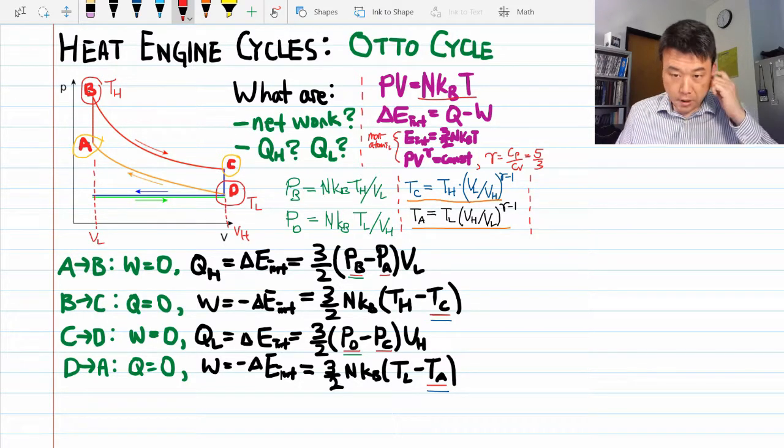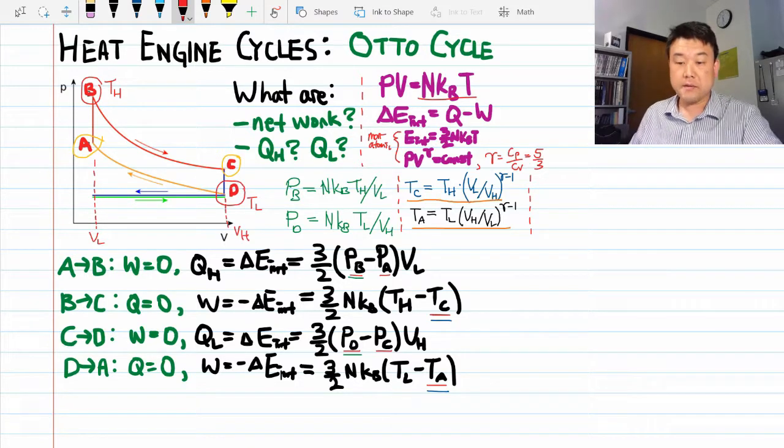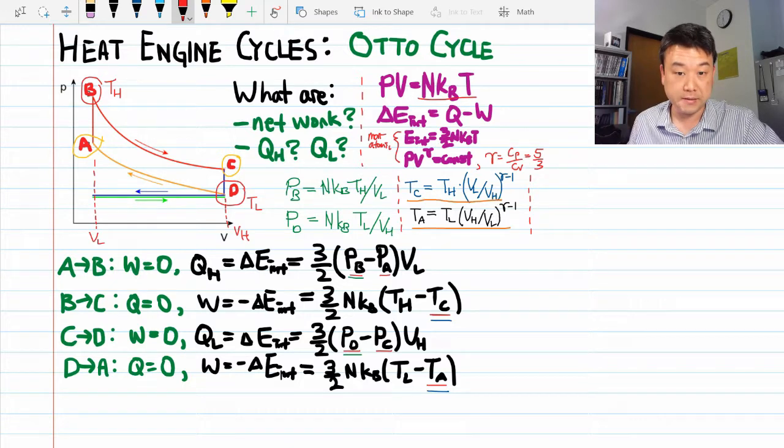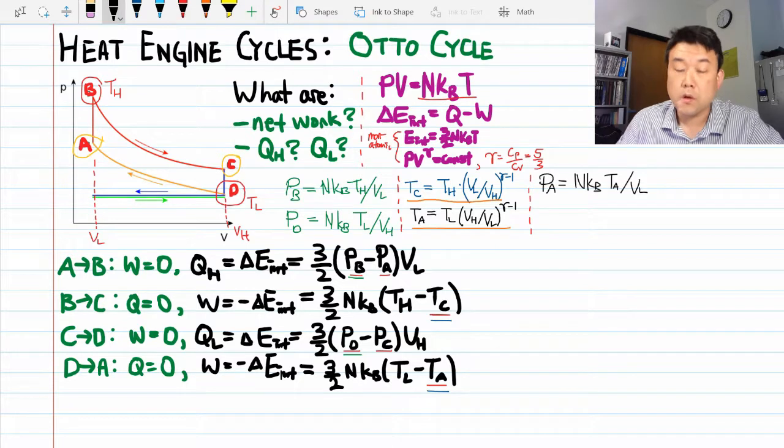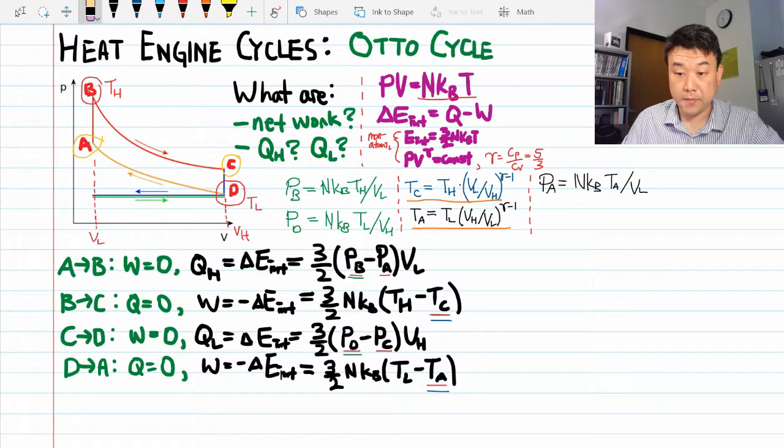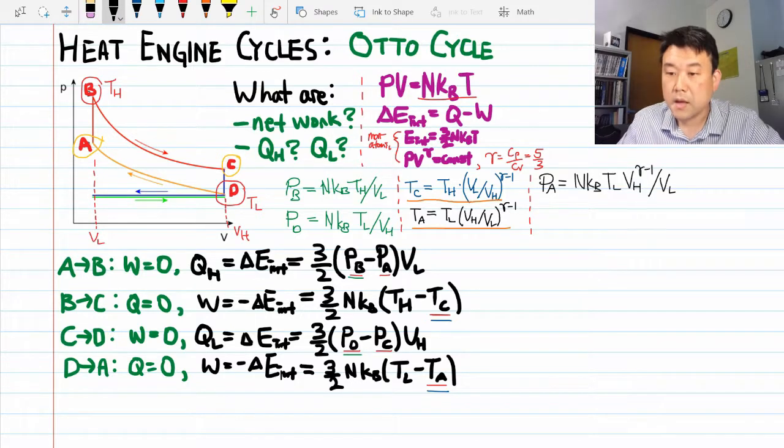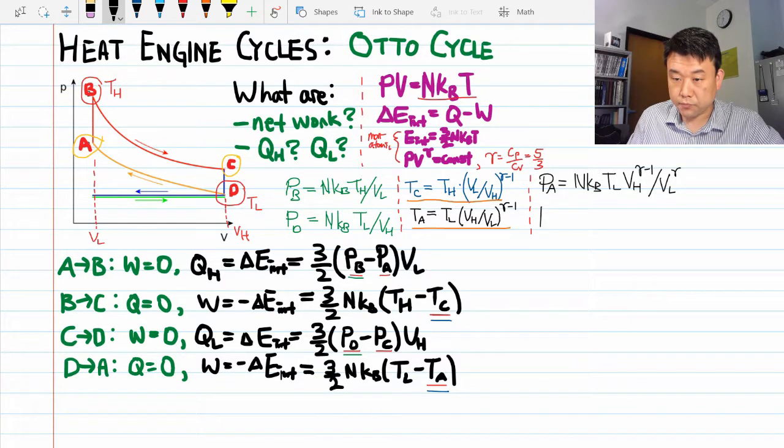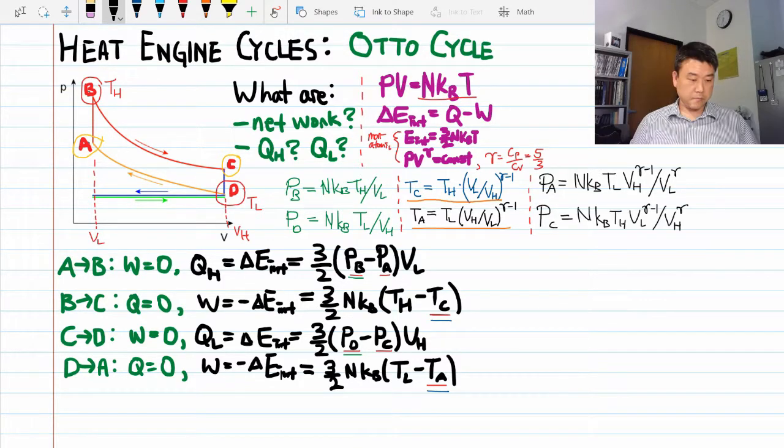That takes care of the unknown temperatures. And now we have the tools to handle pressure at point A and pressure at point C, because now we know the temperature at those points. Or if you plug in the expression for TA from our derived result, I combine the factors of VL together. And we can do the same thing for pressure at point C.